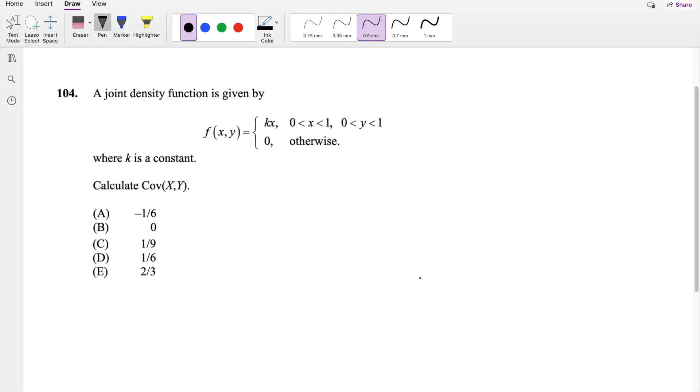In this problem, I'll be going over question 104 on SOA exam P. So pause the video real quick and try this problem yourself. Okay, as some of you attempted, let's just dive right in. So in this question, they give you this function and we don't know what k is, but it's pretty easy to find out what k is because we know this is a distribution function on the interval 0 to 1 for x and y.